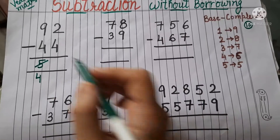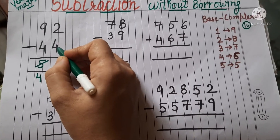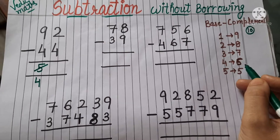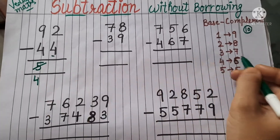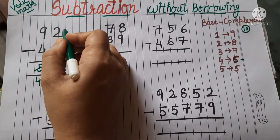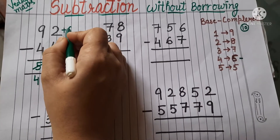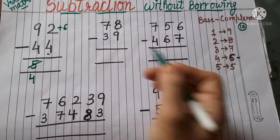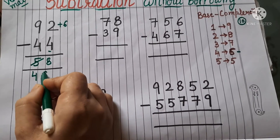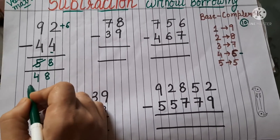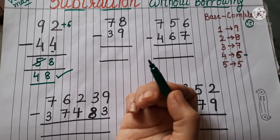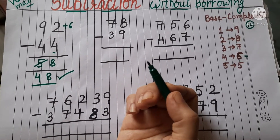Now we have to take care that the complement of 4 is 6. That complement, 6, will be added to the upper number: 6 plus 2 is 8. So 8 is written here, and we have got the answer 48. Very easy!